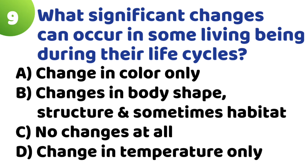Question 9: What significant changes can occur in some living beings during their life cycle? Option A: Change in color only. Option B: Changes in body shape, structure and sometimes habits. Option C: No changes at all. Option D: Change in temperature only. The correct answer is Option B — Changes in body shape, structure and sometimes habits.